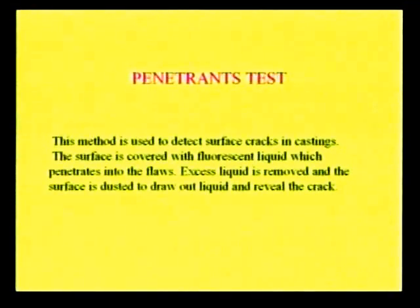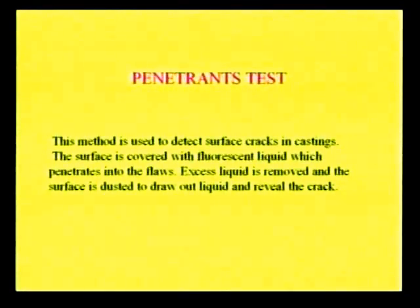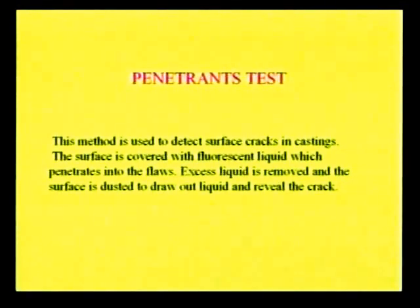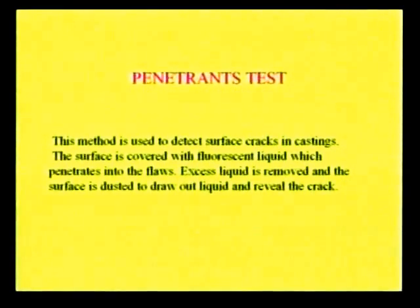The next one is the penetrant test, also named the red dye etchant method. Here, red paint (a fluorescent liquid) is applied on the surface of the casting. The fluorescent liquid penetrates into the flaws. Excess liquid is then removed and the surface is cleaned. After cleaning, the surface is dusted to draw off the liquid and reveal the cracks — the fluorescent material that has penetrated into the cracks becomes visible.